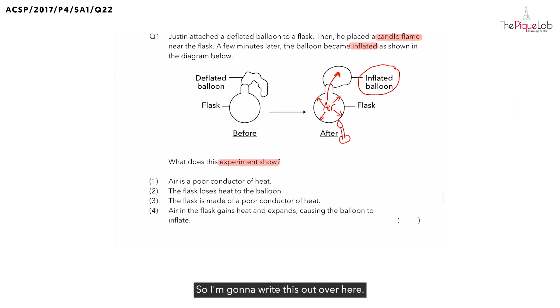So I'm going to write this out over here. We know that the air expanded and increased in volume. And since the air increases in volume, this means did the air occupy more space or less space inside the flask? The air is going to occupy more space. But is there space left inside the flask? No.